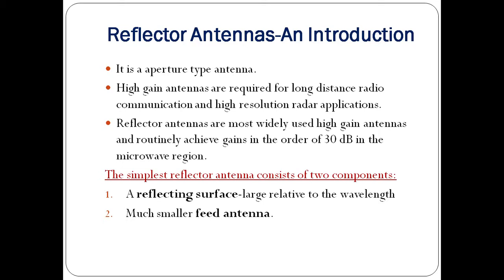The geometry of the reflector antenna consists of two components. One is the reflecting surface, which should be large enough relative to the wavelength of the transmitted signal. The second component is the feed antenna, which should be much smaller compared to the reflecting surface. How to choose the reflecting surface, which configuration is suitable, how to select and place the feed antenna — there are a number of questions. To answer these, we need to understand the basic principles of reflector antennas.